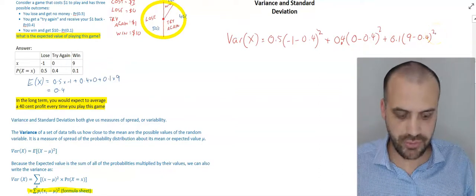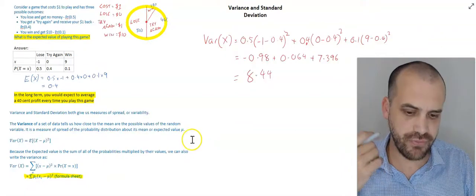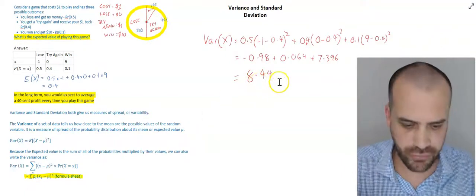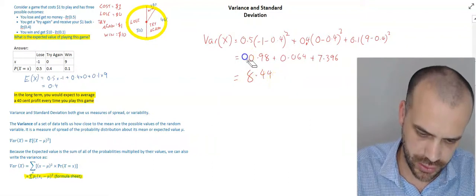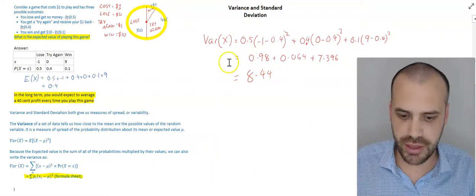That is how we're going to find our variance. So, now we get a variance of 8.44. Be careful there. It's not negative there. It's just positive. We get a variance of 8.44.